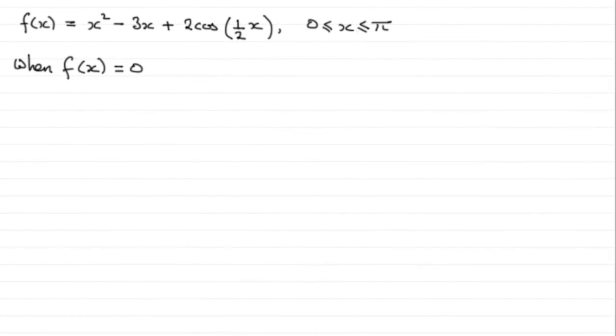Now for this part, we're told that f(x) = x² - 3x + 2cos(½x), where x is valid for 0 ≤ x ≤ π radians. When f(x) = 0, we've got to show that there's a solution, a root in other words, between 0.8 and 0.9.